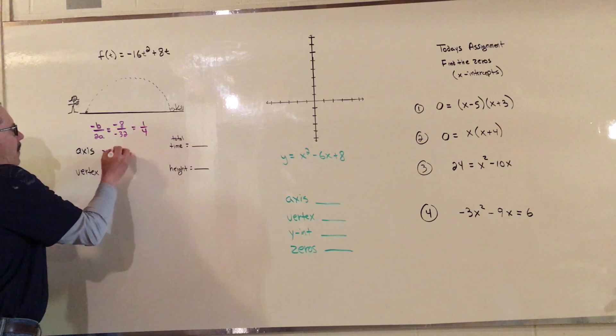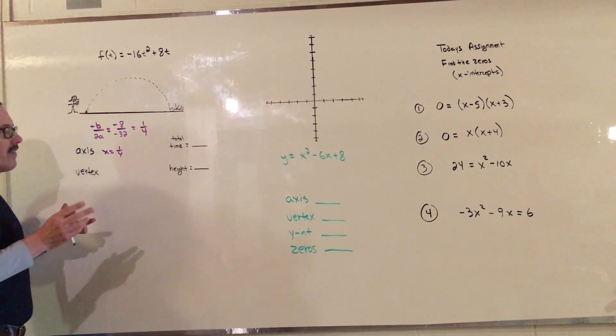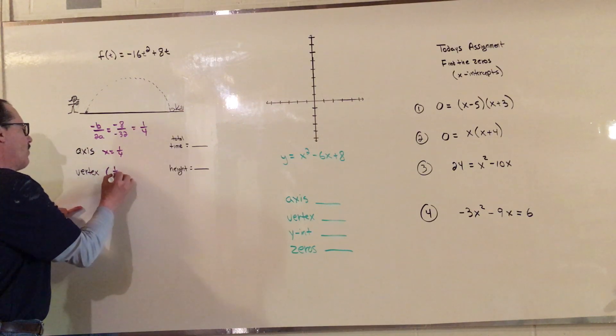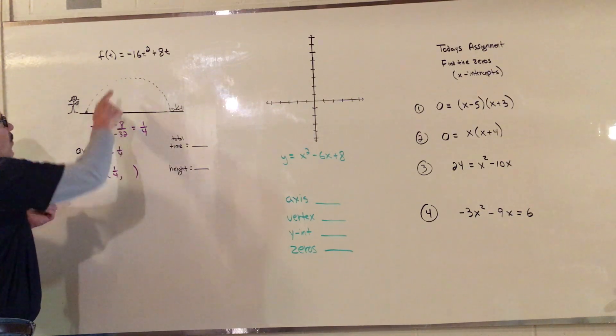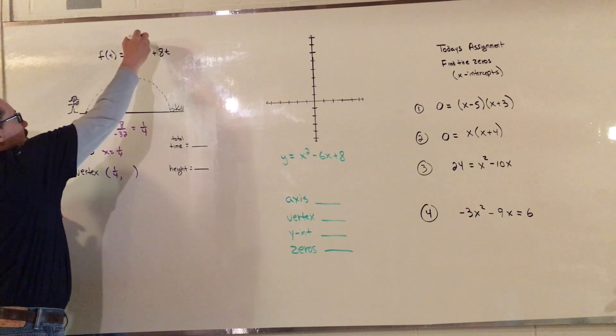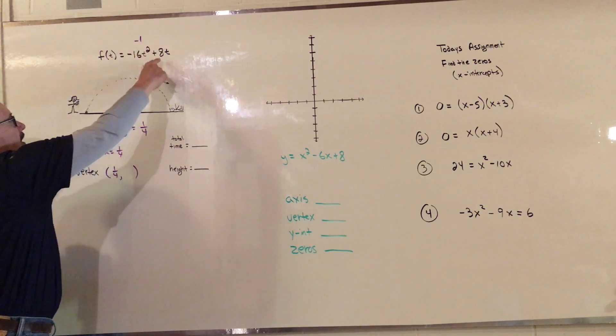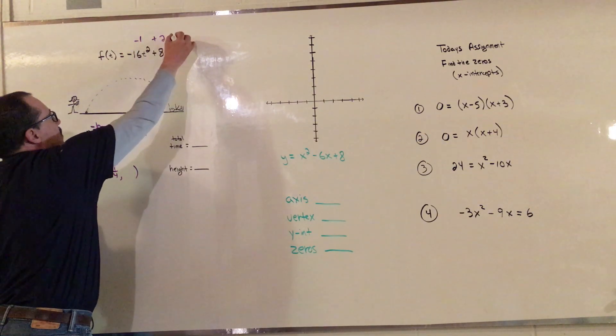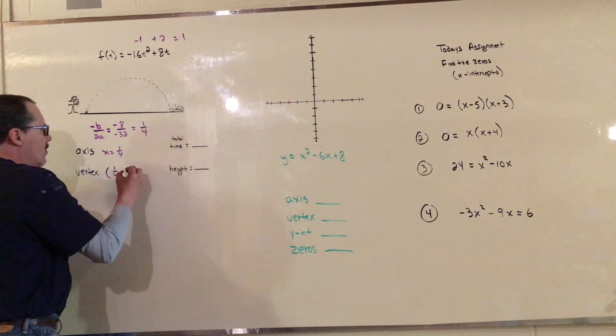You can use 1/4 or 0.25. I actually think it's easier to use the fraction. The vertex, we already know it's going to be 1/4 there. We're going to plug 1/4 up here. 1/4 squared is 1/4 times 1/4 which is 1/16. When you take negative 16 and multiply by 1/16 you get negative 1. 8 times 1/4 gives you 2. Negative 1 plus 2 equals 1.